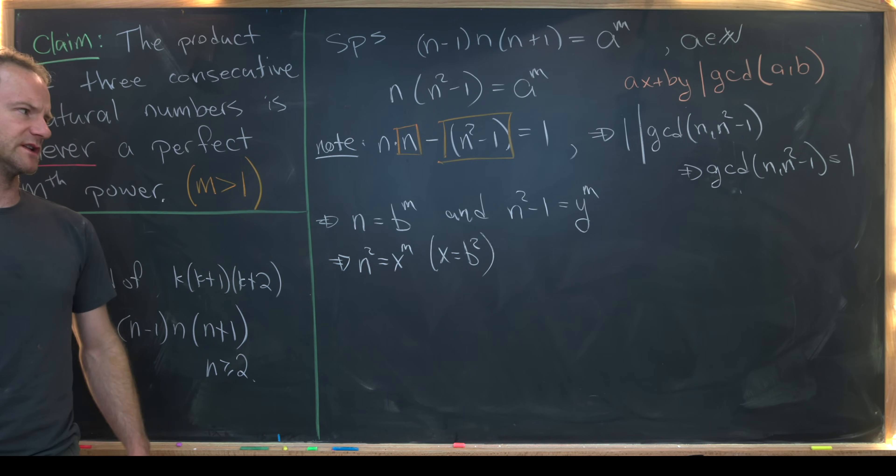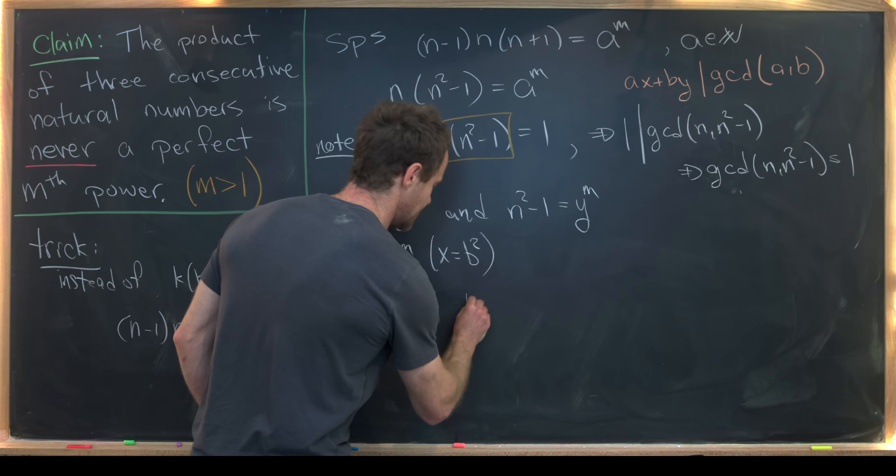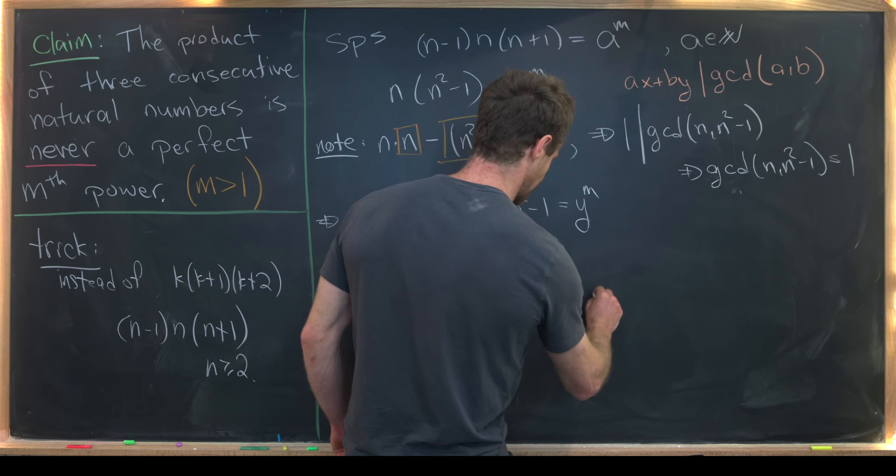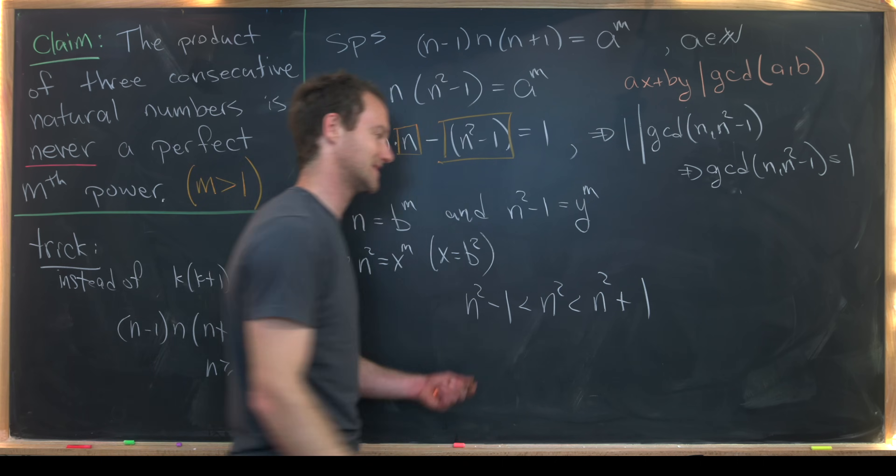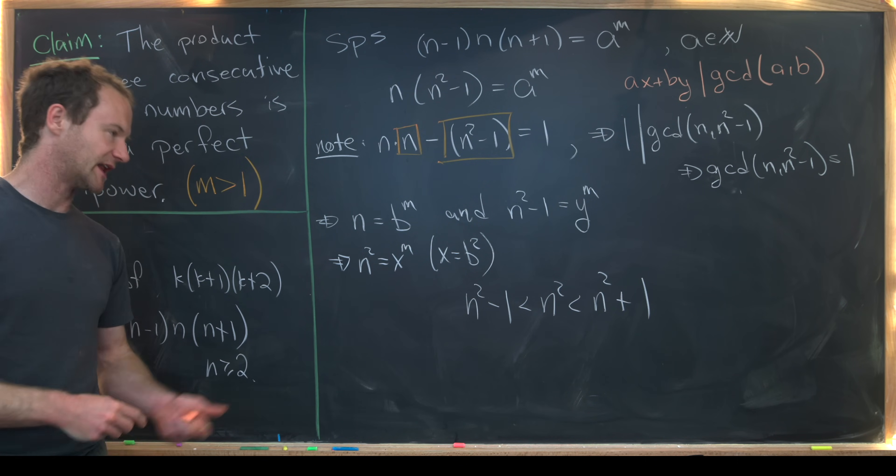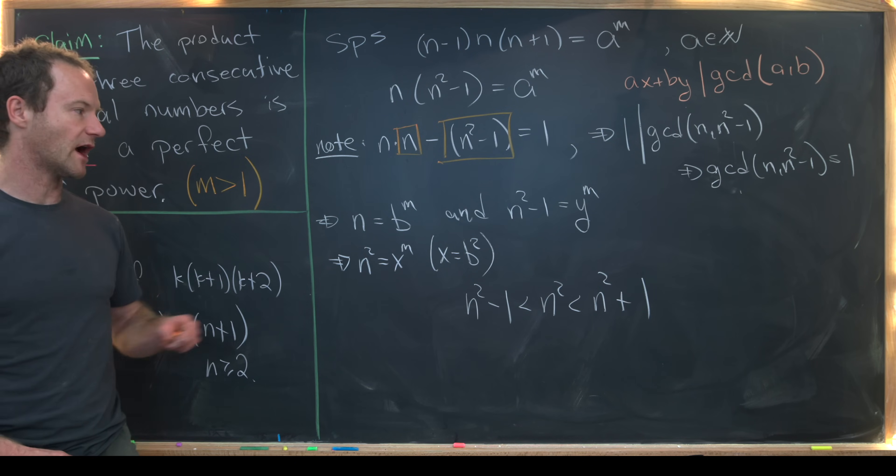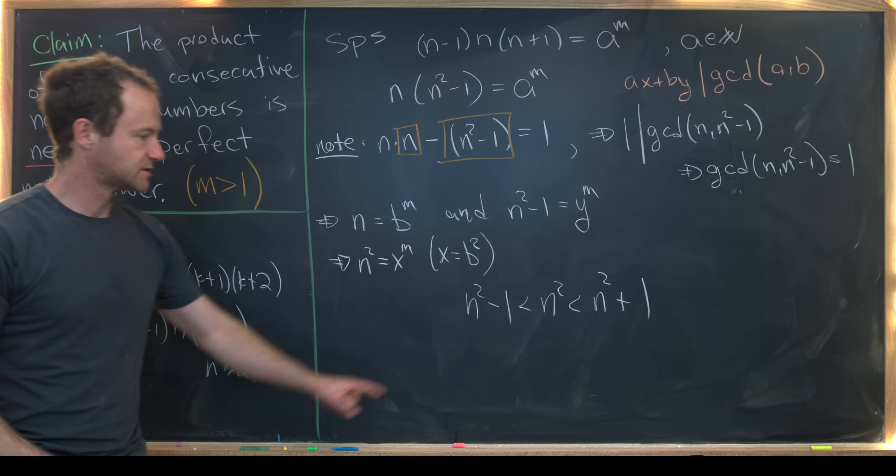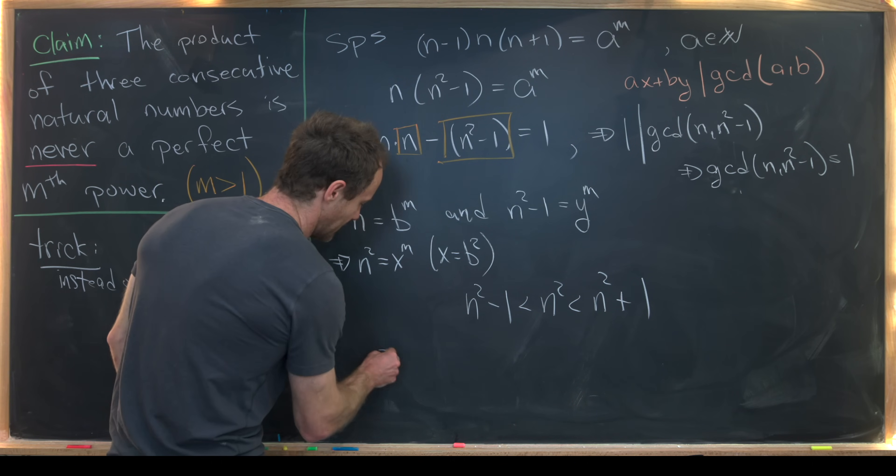Now I'm going to write down what is maybe a very obvious inequality, and that's n squared minus 1 is strictly less than n squared, which is strictly less than n squared plus 1. So like I said, that's a very obvious inequality. But now I'll take that inequality and rewrite it with parts from our setup here. So notice this n squared minus 1 is y to the m.